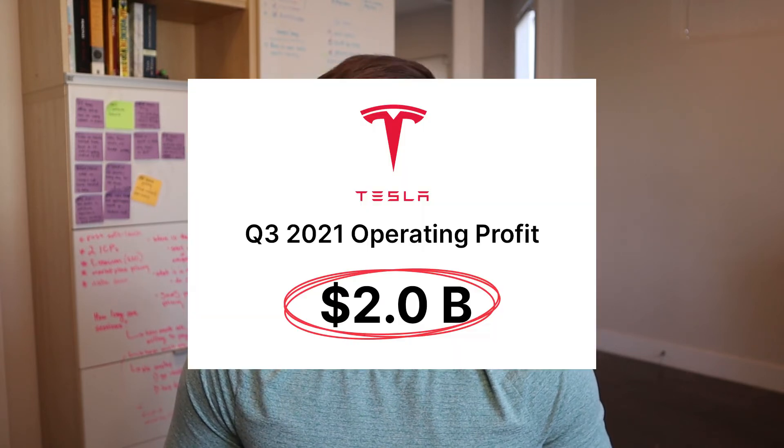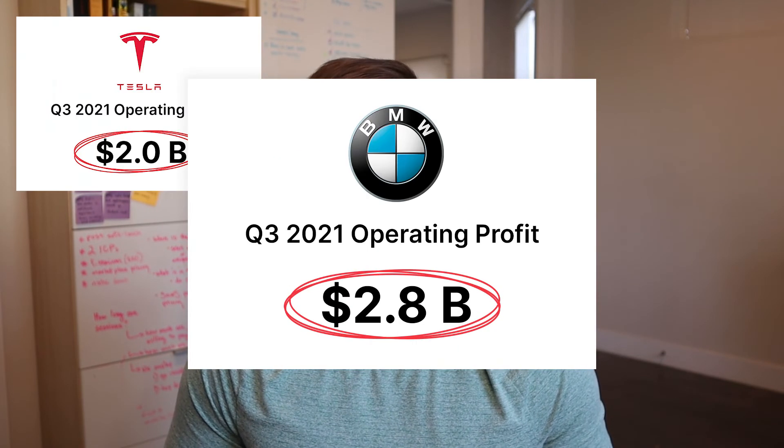flamethrowers and red short shorts. Operating profit is also useful when you're trying to compare one business to another — for instance, comparing Tesla's Q3 of two billion to BMW's Q3 of 2.8 billion.